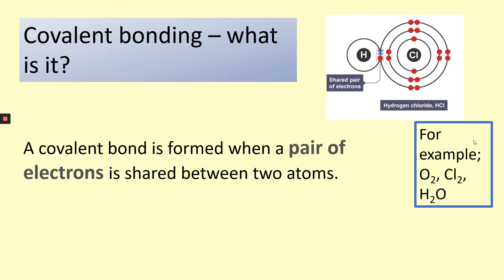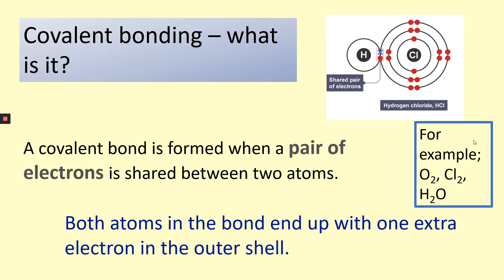In bonding we only really are interested in the outer shells. In a minute we're going to look at different molecules — oxygen, chlorine, and water — and we're only going to look at the outer shells. Both atoms in the bond end up with one extra electron in their outer shell. Hydrogen originally has only one electron as an atom. Chlorine has seven electrons in its outer shell; hydrogen now shares an additional electron so it has two — the first shell can only fit two electrons. Chlorine then has eight, which is the maximum.